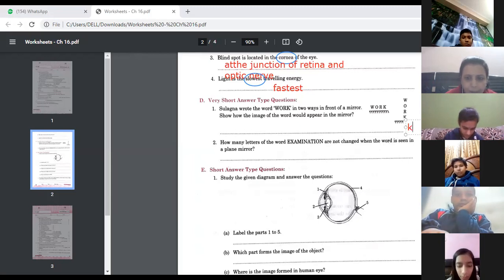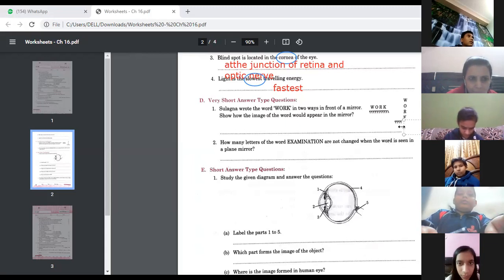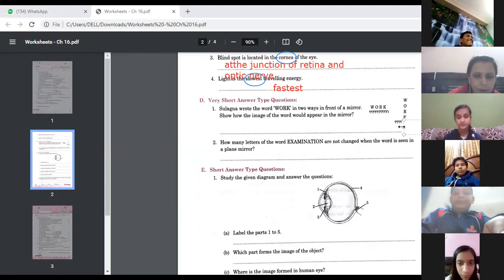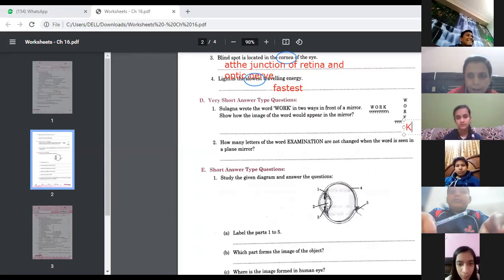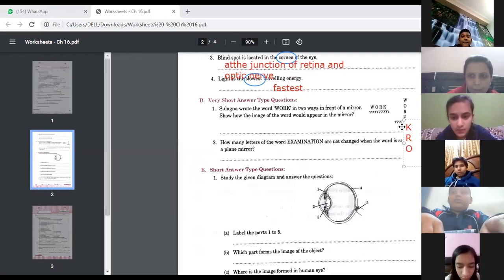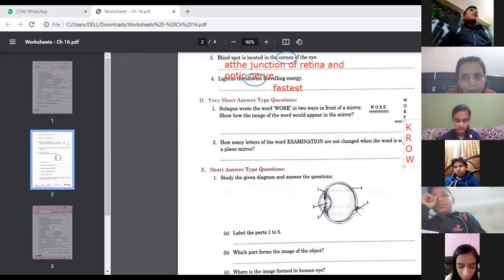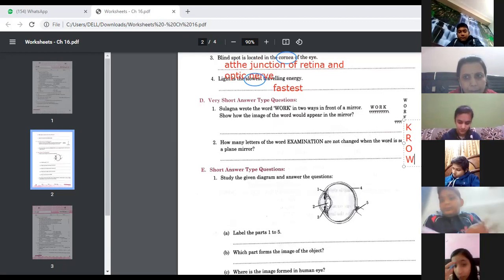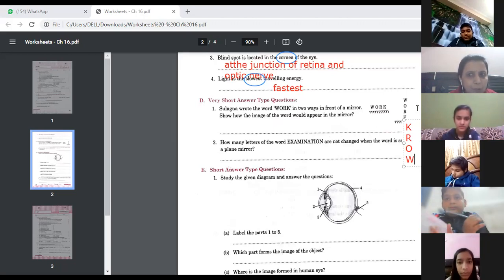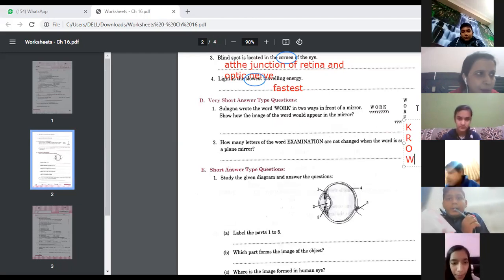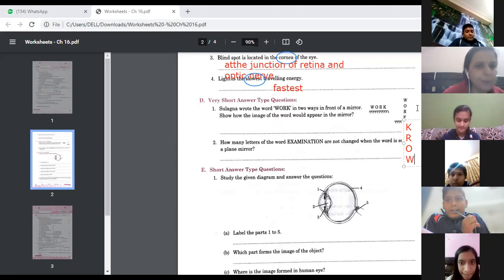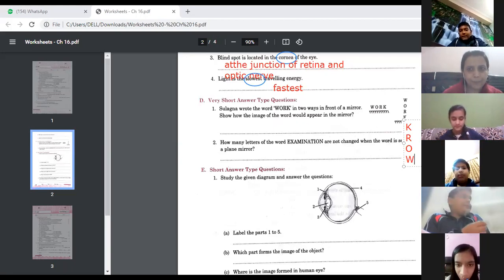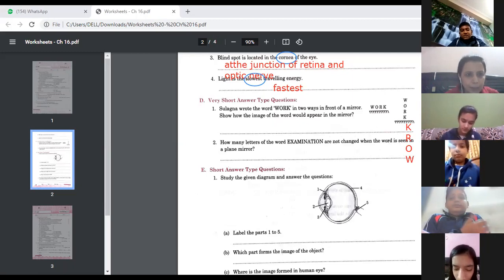Now just see how you are able to write down this word. Write down the correct words. First of all, whenever you are writing in the mirror, this word will be there. It will be K, after that R, after that O, and after that W. Will it be like that? Yes, and make it inverted also. Inverted means left appears right, right in that way, literally inverted. Yes, literally inverted you have to write down.